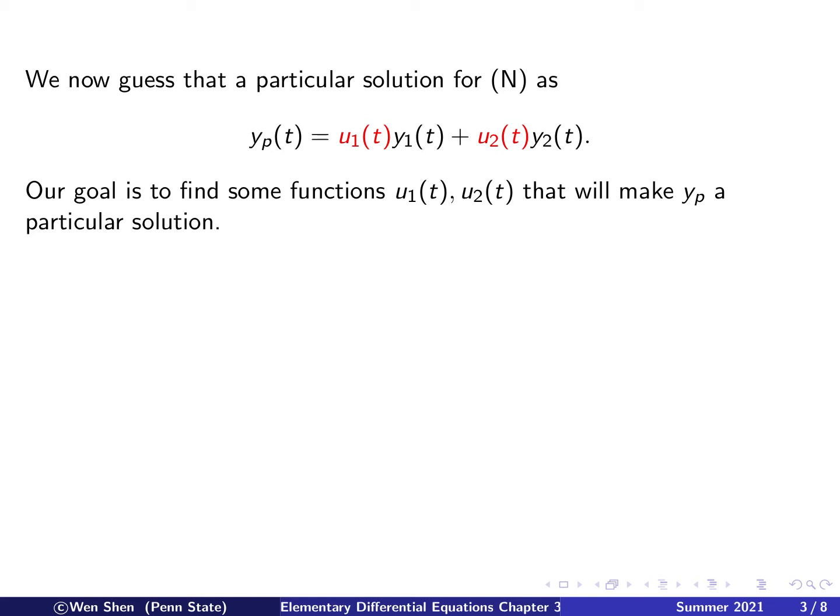Here is the core idea of the method. We are going to guess a particular solution. The guess takes the solution for the homogeneous problem — c1 y1 plus c2 y2, where c1 and c2 are constants — and we remove those two constants and replace them with two functions: c1 is replaced by u1(t) and c2 is replaced by u2(t). Our goal is to find functions u1 and u2 such that putting them in here makes yp a particular solution.